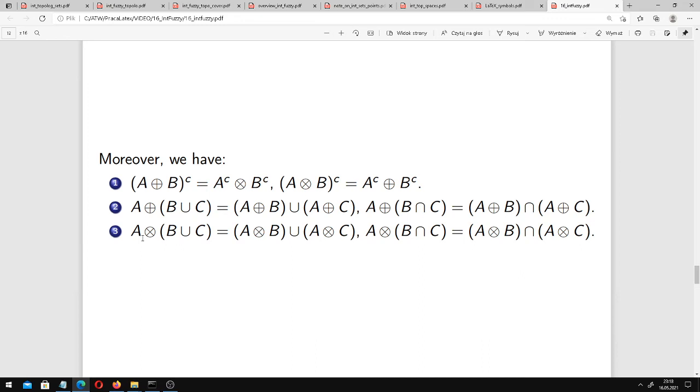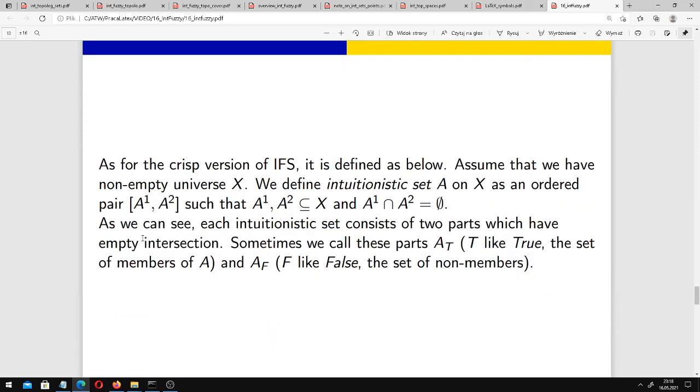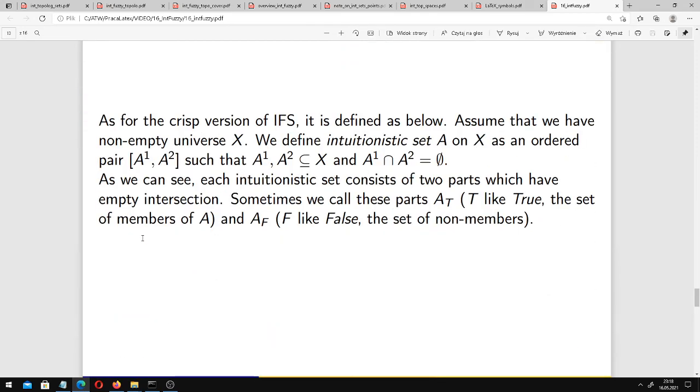As for the crisp version of IFS, it's defined as follows. Assume that we have a non-empty universe, as always, and we define an intuitionistic set, or double set A on X, as an ordered pair (A₁, A₂) such that A₁ and A₂ have empty intersection. So each intuitionistic set consists of two parts which have empty intersection, and sometimes we call these parts true and false. So indeed, this is a crisp, discrete version of intuitionistic fuzzy sets.